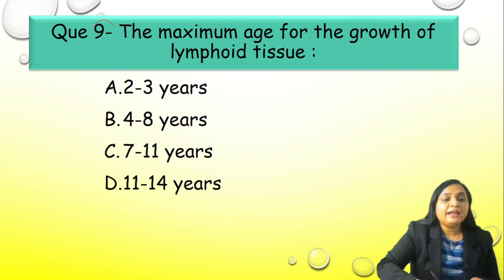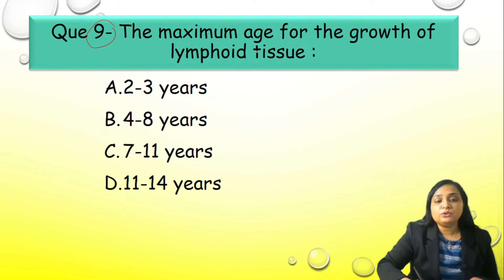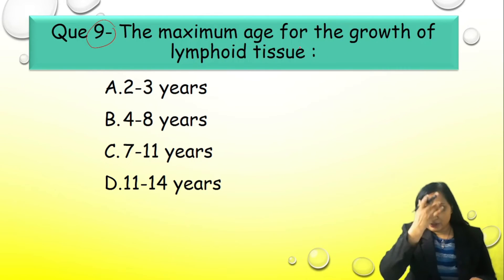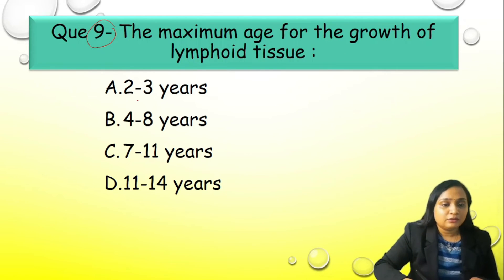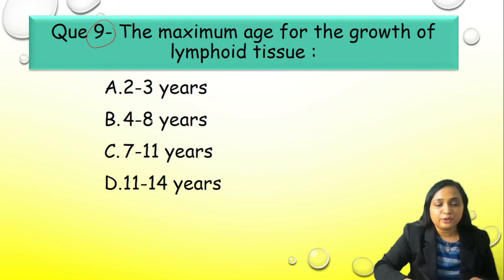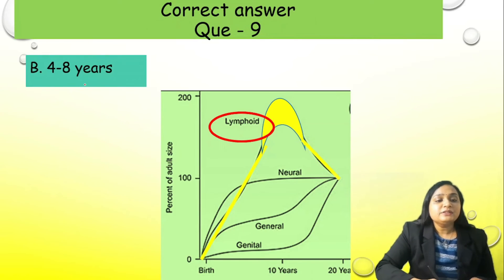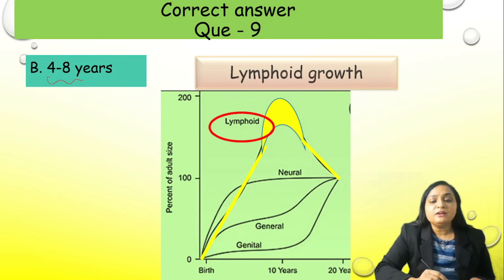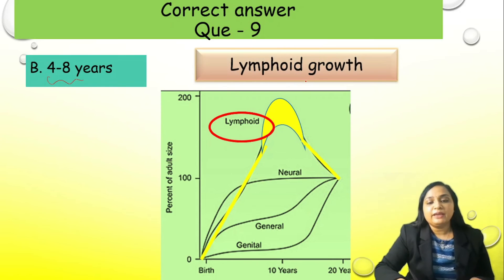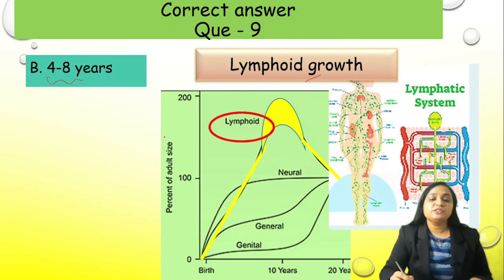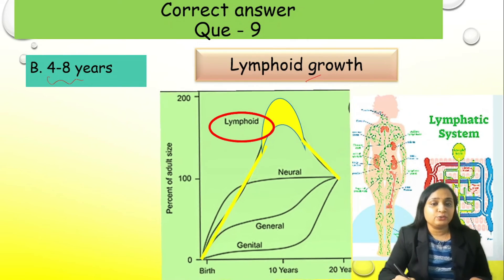Question number 9: The maximum age for growth of lymphoid tissue is between — A) 2 to 3 years, B) 4 to 8 years, C) 7 to 11 years, or D) 11 to 14 years. You don't need to understand it, just remember: the maximum growth of lymphoid tissue is found between 4 to 8 years.